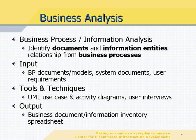Let's examine the EIA process one by one. In business analysis, it involves the process and information analysis to identify the documents, information entities, and their relationships from the existing or newly proposed business processes. These processes are defined in a collection of BP or system documents in the enterprise. We also collect user requirements for the actual business information needs. With tools like UML use case and activity diagrams, we can formally document our analysis for ease of sharing and discussion. When we encounter ambiguity about the process or information, we can conduct user interviews to clarify the common business understanding.